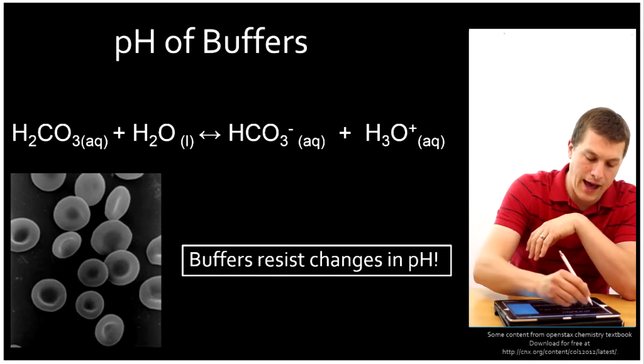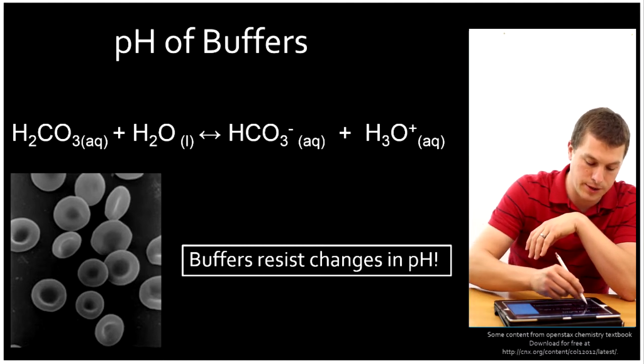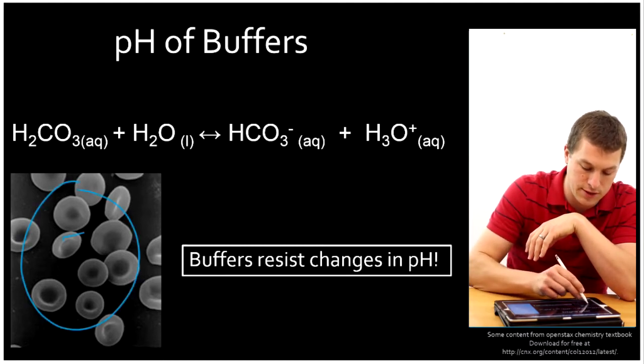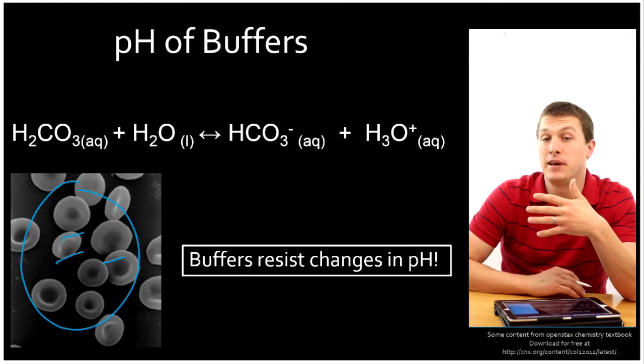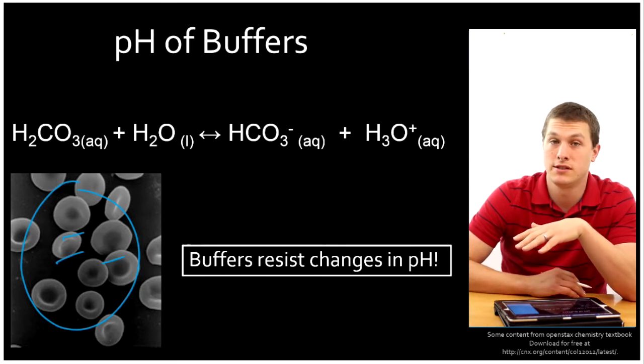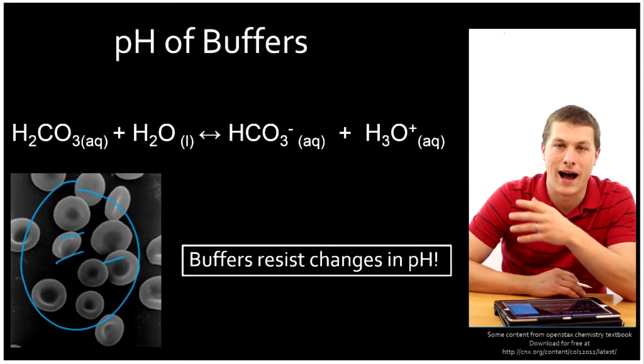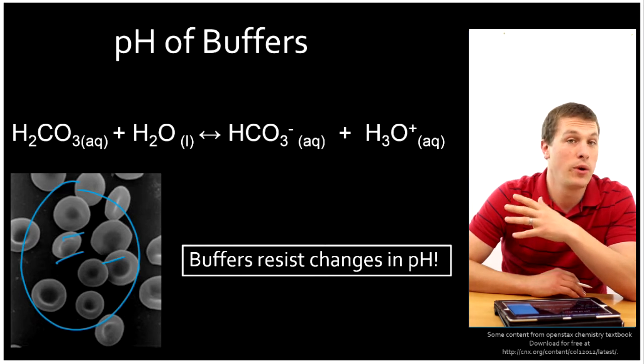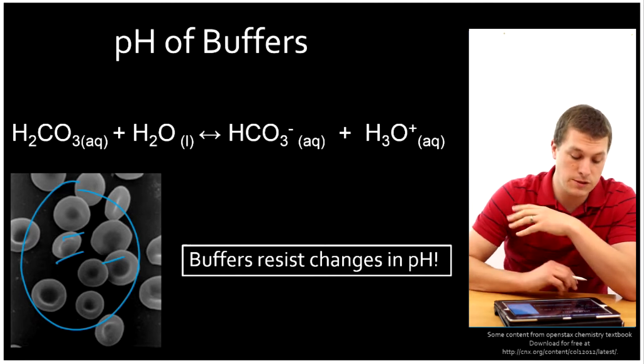A really important example of that is our bloodstream. So down here we have a bunch of red blood cells and it turns out if you just change the pH a little bit, those red blood cells stop working and you die. So what do we do? We have our blood buffered.